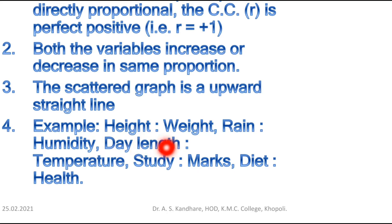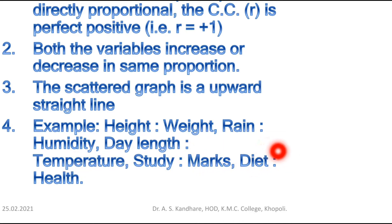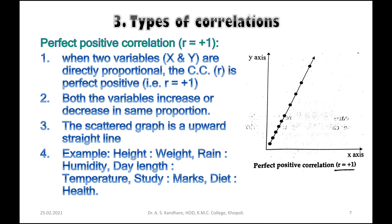Day length and temperature are two positively correlated variables. Similarly, study and marks are positively correlated — more study results in more marks. Another example is diet and health: a good diet improves health, so there is a positive correlation between diet and health.